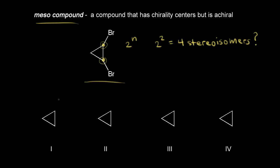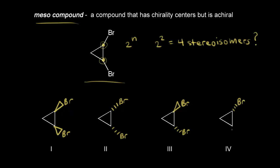Our first stereoisomer could have both bromines coming out at us in space. For the second possibility, we might have both bromines going away from us in space. For the third possibility, we could have one bromine up and one bromine down. And for the fourth, just reverse them — have the top bromine down and the bottom bromine up.